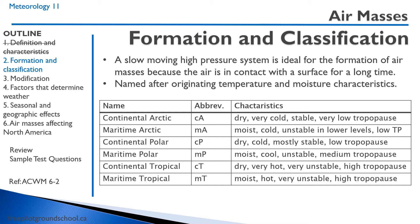Maritime Arctic is unstable at lower levels and originates in northern maritime regions. We have continental polar air masses, which are similar to continental Arctic but not quite as cold. Then we have the maritime polar, which is a cool air mass and tends to be unstable. The continental tropical air mass we don't have in Canada — it's dry, very hot, very unstable, with a high tropopause. This is what we would find over the southern United States, like Texas or Nevada.